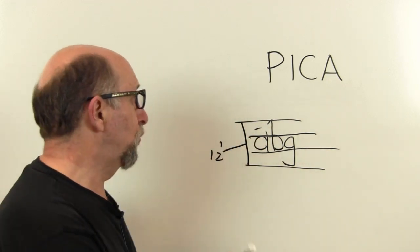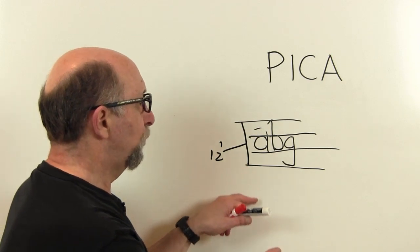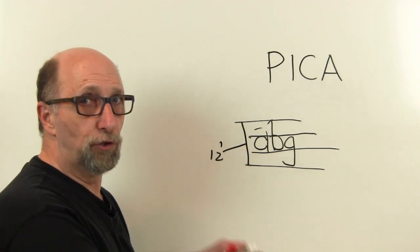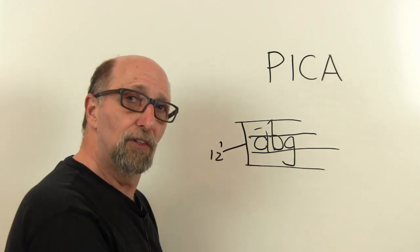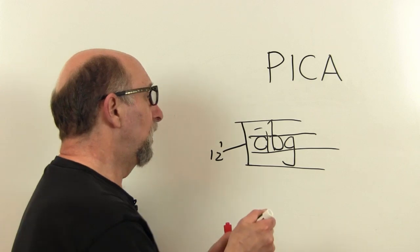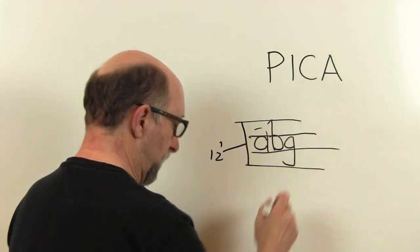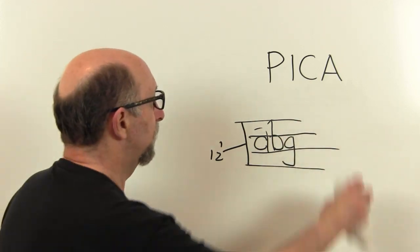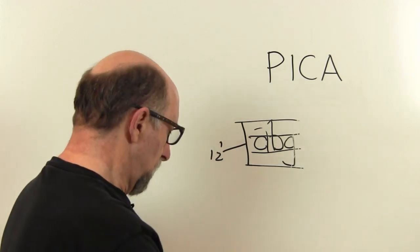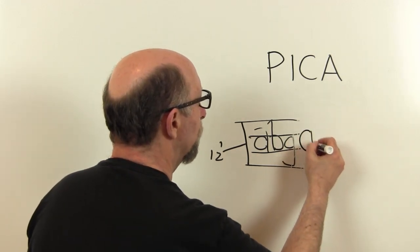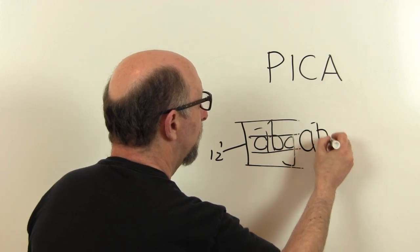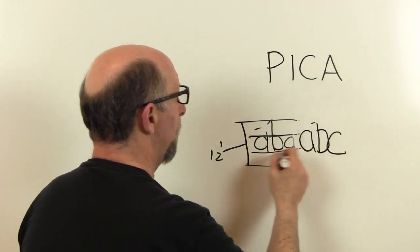12-point type means that this dimension here is 12 points. So you could set lines of 12-point type 12 points apart. You couldn't set them 11 points apart because they would be banging on top of each other. So they could be 12 points.